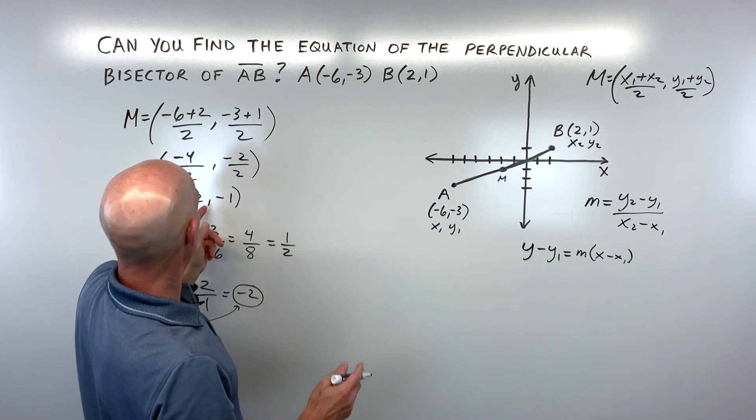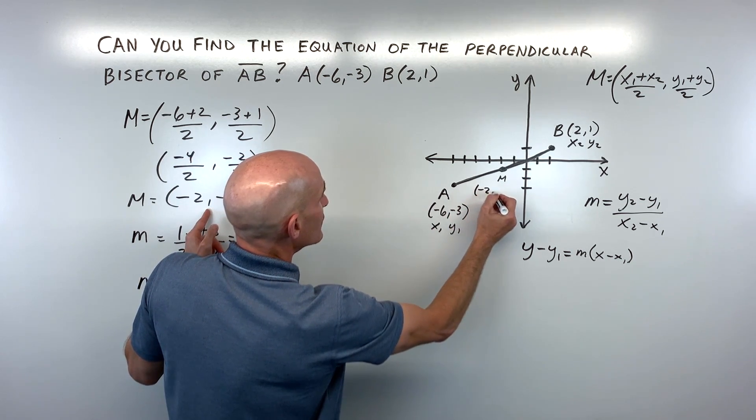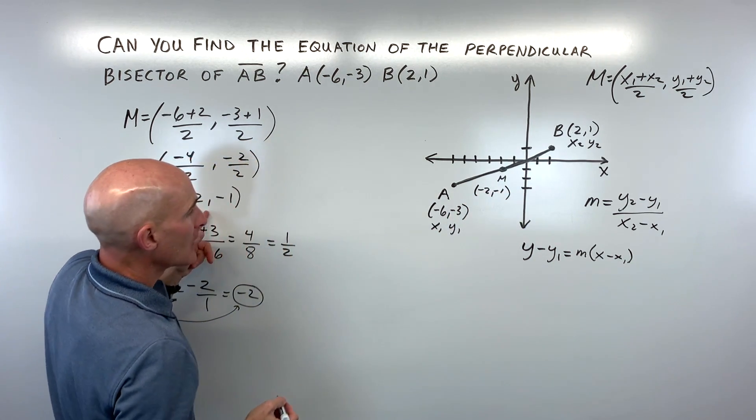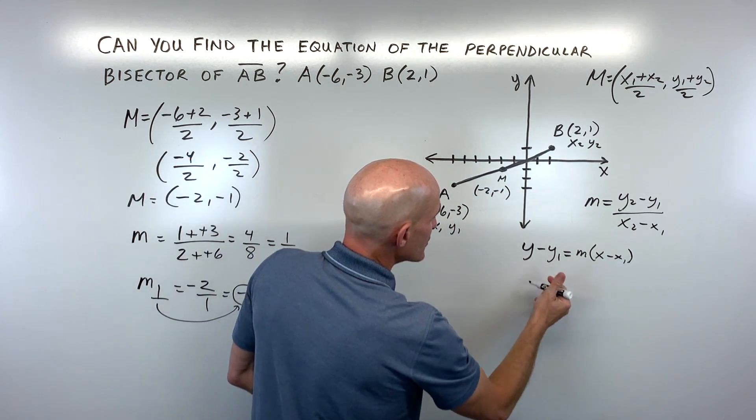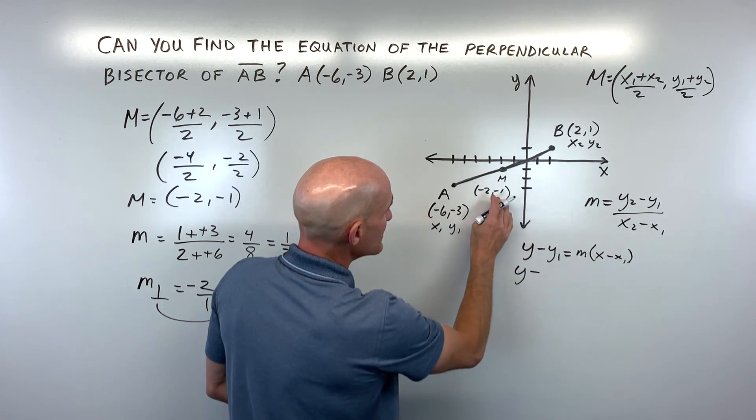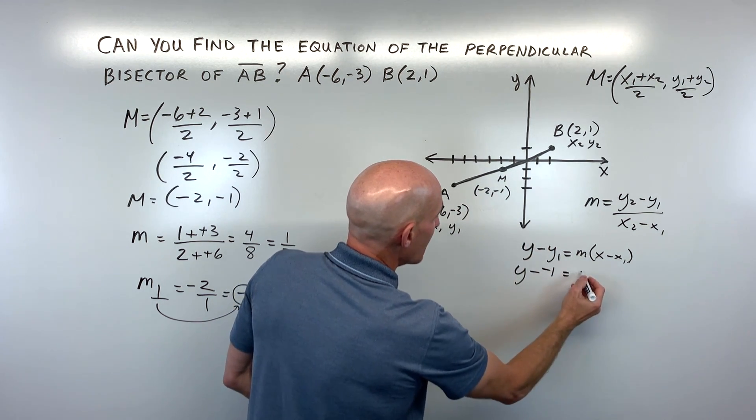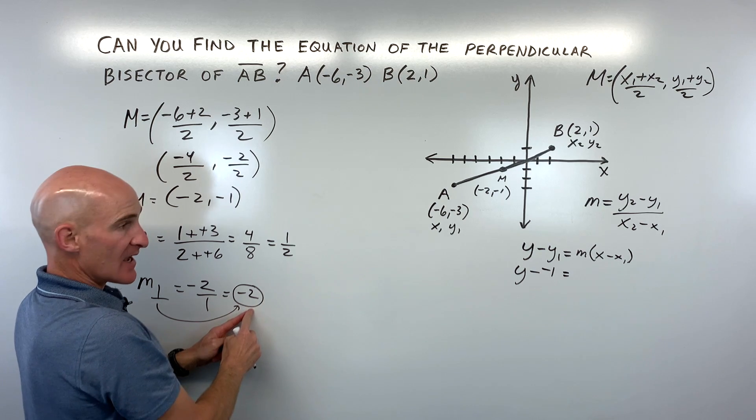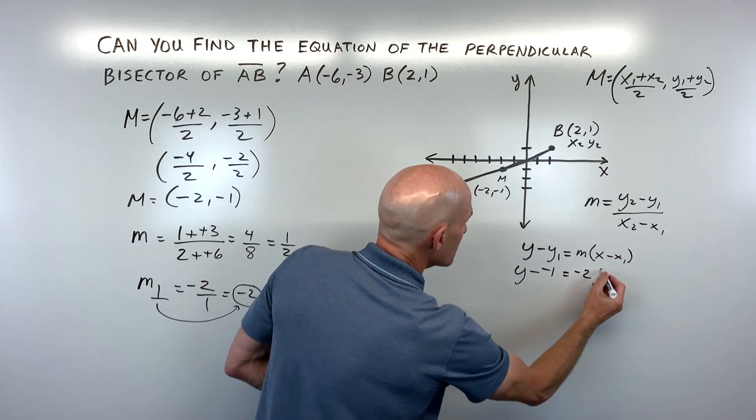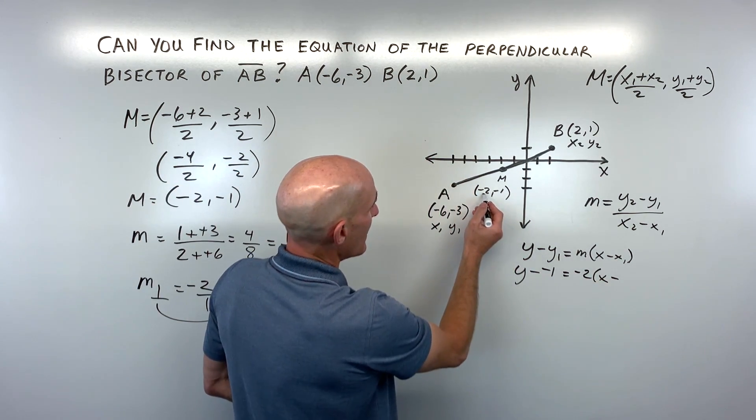So in this case, since it's going through the midpoint, which we said was negative 2, negative 1, we're going to use that right here. So let's go ahead and do that. So we have y minus the y-coordinate, and we have the slope, which we said is negative 2, times x minus the x-coordinate. Remember, when you subtract, it's like adding the opposite.